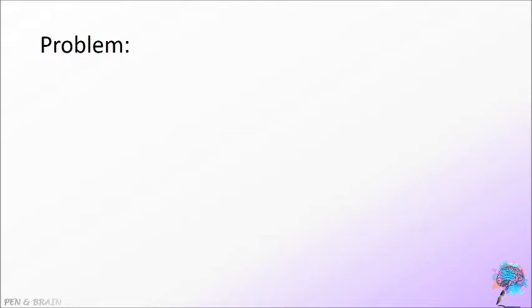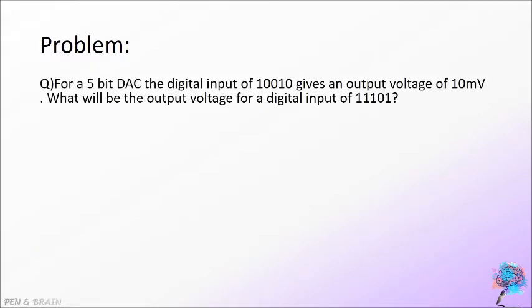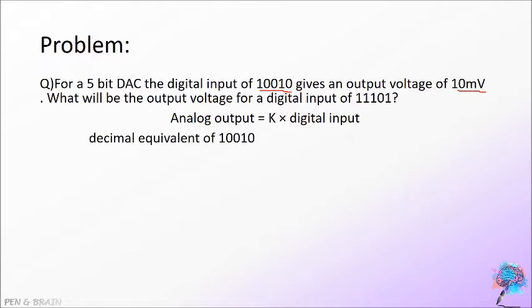Let us solve a basic level problem of DAC. For a 5-bit DAC, the digital input of 10010 gives an output voltage of 10 millivolt. The relation connecting analog output to digital input is analog output is equal to K into digital input. We have to find the decimal equivalent of 10010 for the calculation.